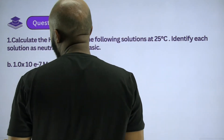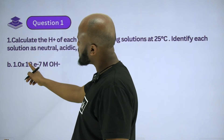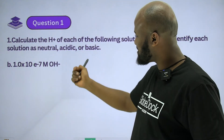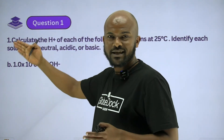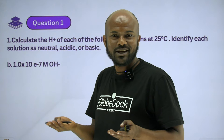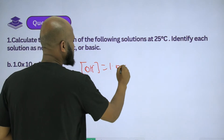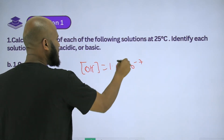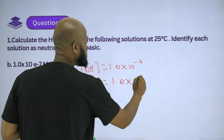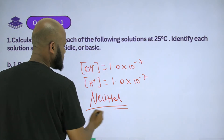Now, the concentration of hydroxide ion is 1.0×10⁻⁷. The concentration of H⁺ is equal to 1.0×10⁻⁷, which is the concentration of a neutral solution. Since both H⁺ and OH⁻ concentrations are 1.0×10⁻⁷, the solution is neutral.